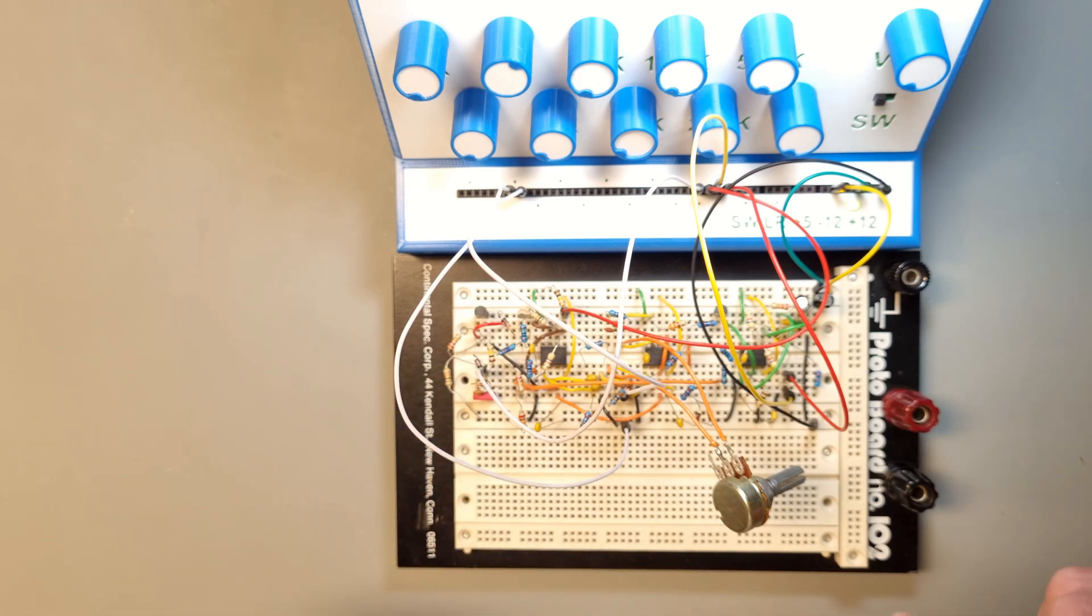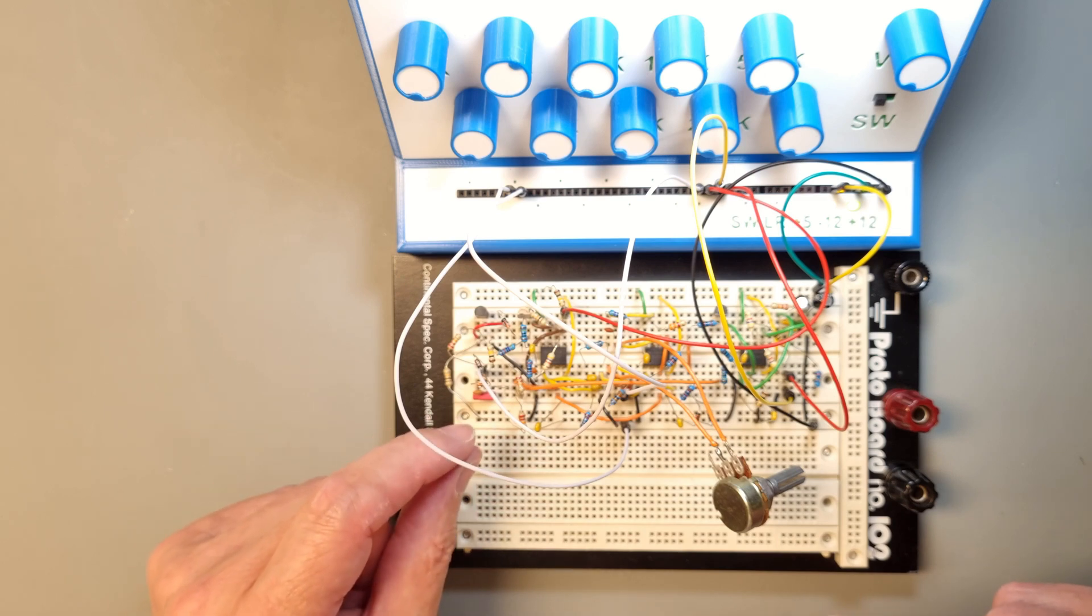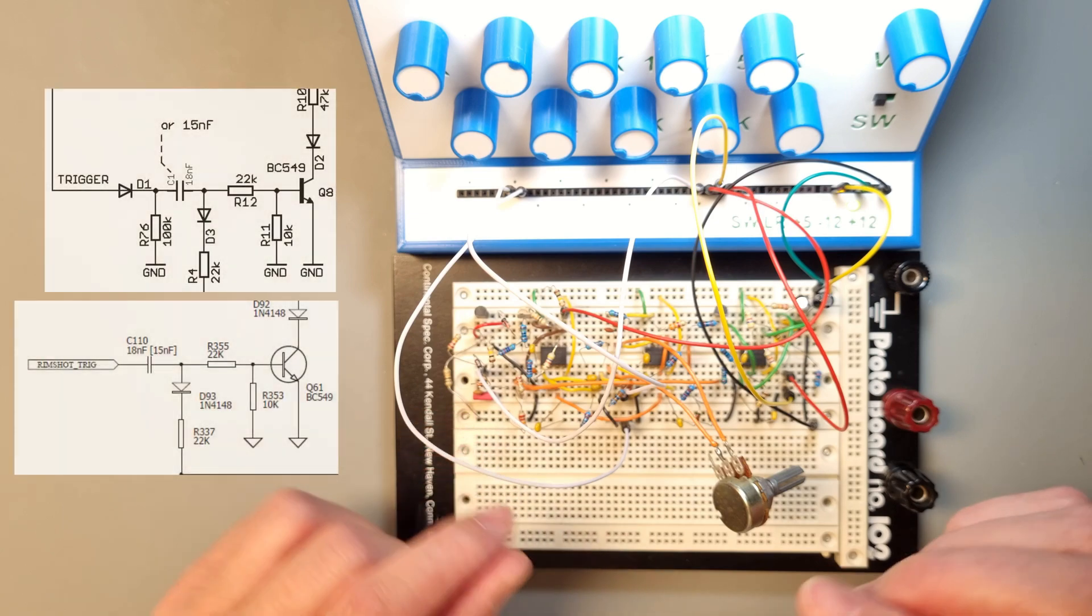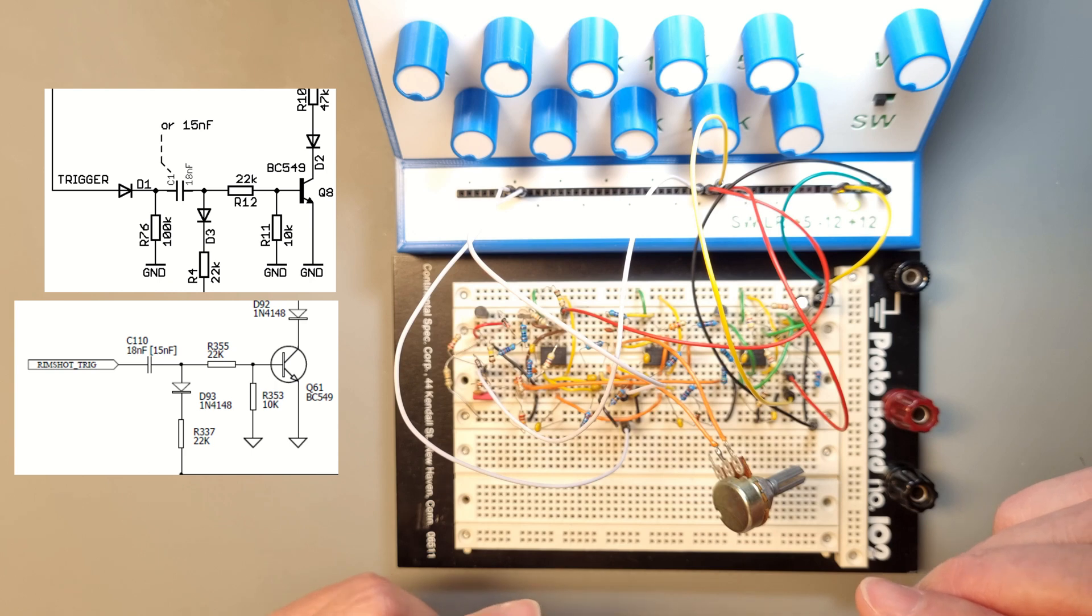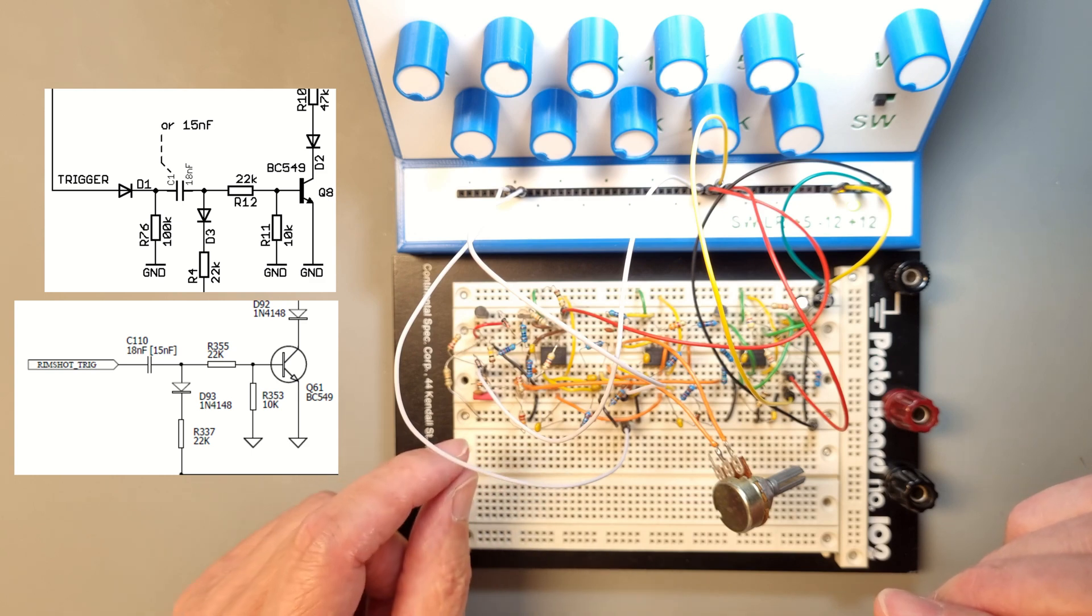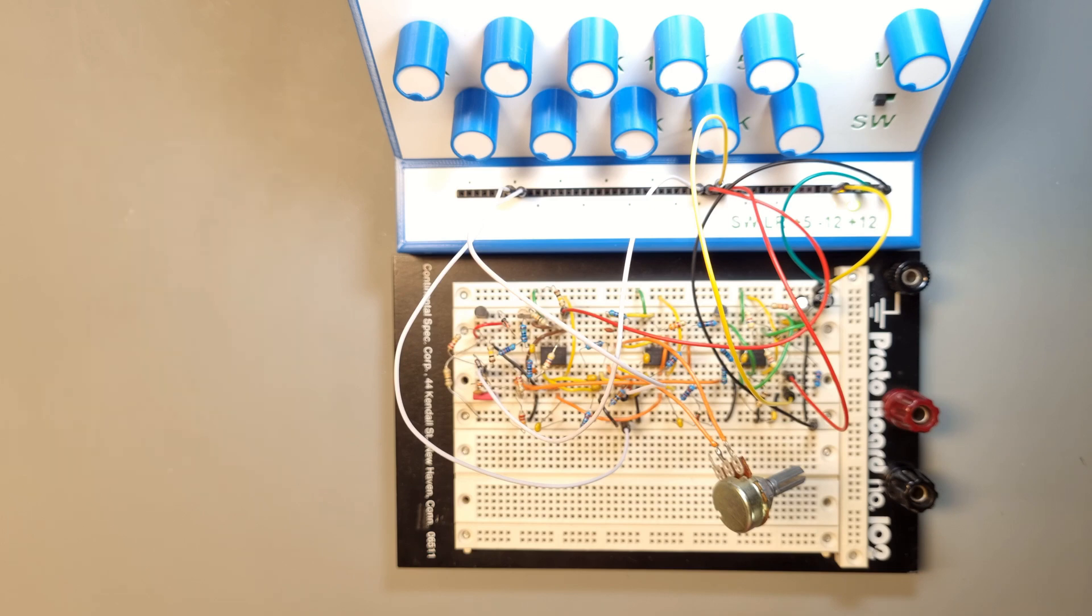One thing that I found out that was quite important was the value of the capacitor on the trigger input. There are three different values that occur in the schematic diagrams: 10 nanofarad, 15 nanofarad, and 18 nanofarad. And 18 is the value that is used by Roland in the 909, TR-909.